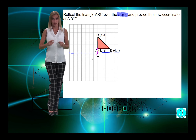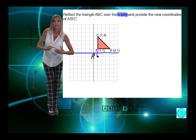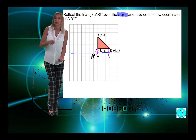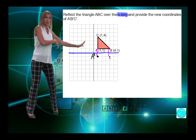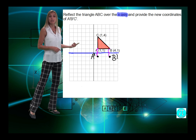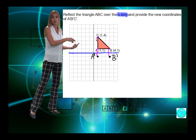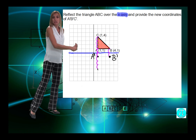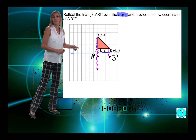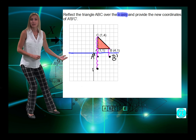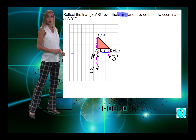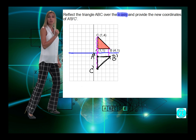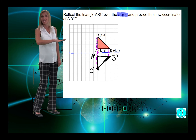Point A is one unit away from the mirror, so it's going to see itself one unit away on the other side — that is our point A prime. Point B is also one unit away from the mirror, so it's going to see itself one unit away on the other side. C is four units away from the mirror, so it's going to find itself the same amount of units on the other side. We place A prime, B prime, and C prime the same number of units they are from the line of reflection.